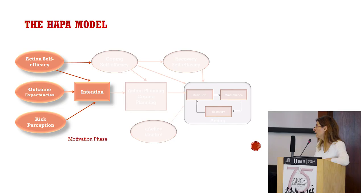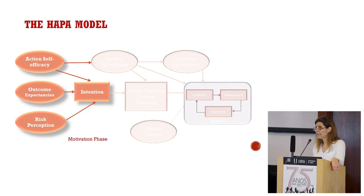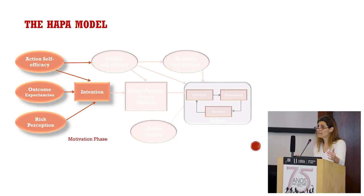The model has two phases. In the initial motivation phase, an individual develops an intention to act. The most important constructs contributing to intention are risk perception, outcome expectancies, and action self-efficacy. Risk perception is seen as a distal antecedent and negligible in many contexts. Outcome expectancies are chiefly important in this phase, when someone balances the benefits and costs expected by adopting the behavior. Outcome expectancies can be social, emotional, or physical, for example.